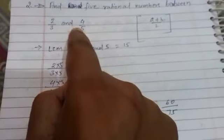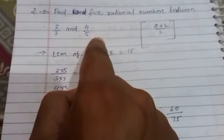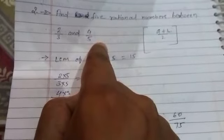In this way you can find the rational numbers between any two given rational numbers. So thank you, and I hope you will understand it very well.